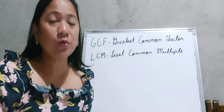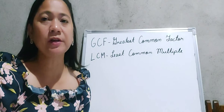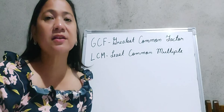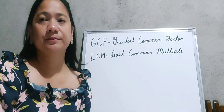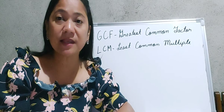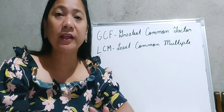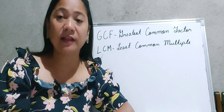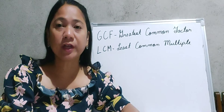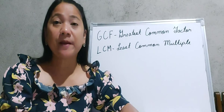We all know that GCF stands for greatest common factor and LCM stands for least common multiple. There are also other ways to find the LCM and GCF of a given number, like using the listing method and the prime factor method. For our tutorial, we will use the continuous division method.